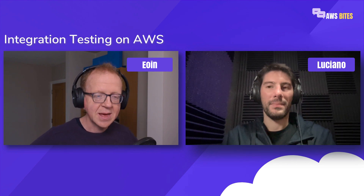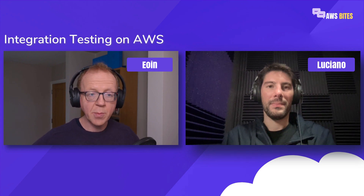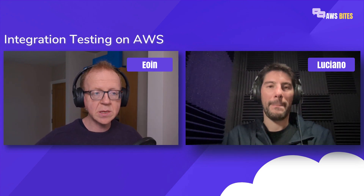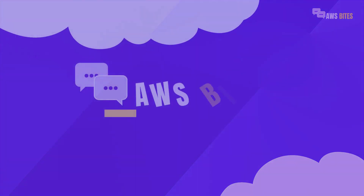We'll also talk about some of the alternatives. By the end of this episode, you should have a good idea of how you can use IATK, and we'll share a project where we've been able to use it to test a cross-account application with EventBridge. My name is Owen, I'm here with Luciano, and this is AWS Bytes.